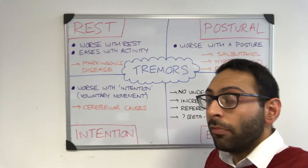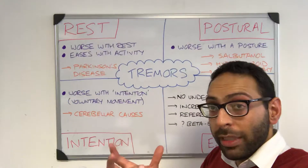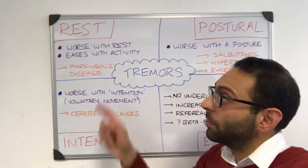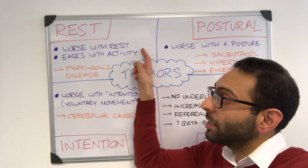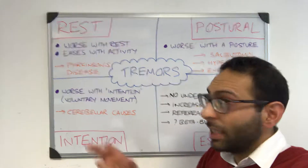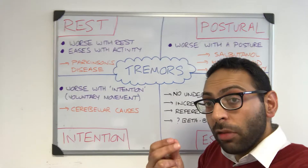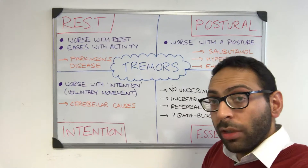Let's start with rest tremor. Rest tremors are slow, low frequency, typically worse with rest as the name suggests, and ease with activity. Think about Parkinson's disease — things like your pill rolling tremor as a good example.